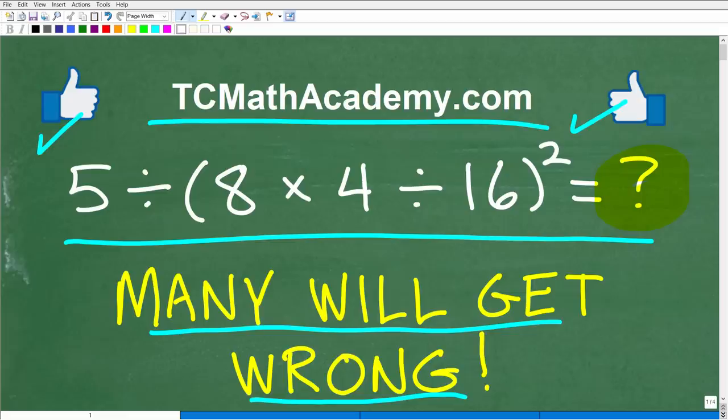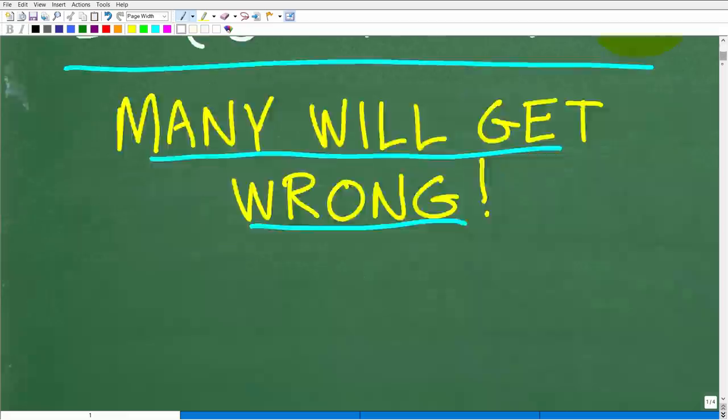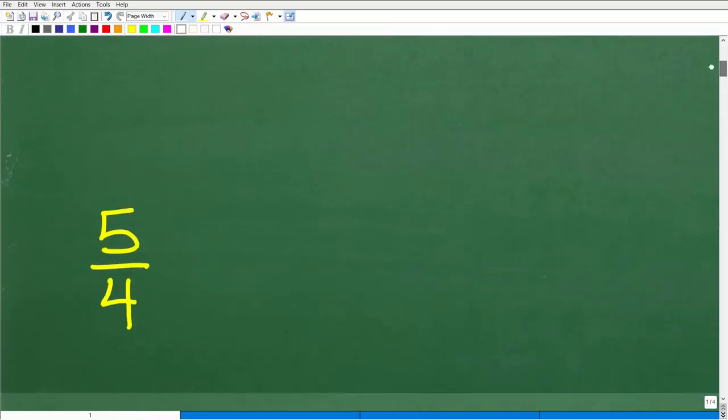All right, so let's go ahead and take a look at the answer. If you're not ready to see it just quite yet, just put this video on pause. But let's go ahead and see the answer to this problem. The correct answer is 5 fourths or 5 over 4.